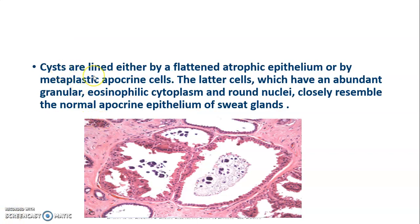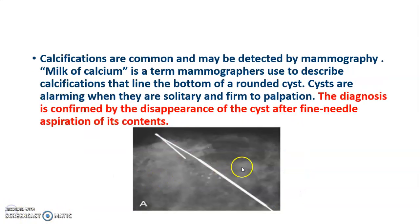The cysts are lined by either flattened atrophic epithelium or by metaplastic apocrine cells. These apocrine cells have abundant granular eosinophilic cytoplasm, round nuclei, and they closely resemble normal apocrine epithelium of sweat glands. So the dilated cysts are lined by apocrine cells. On mammography, calcifications are seen.